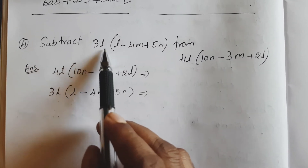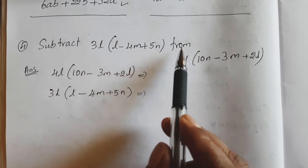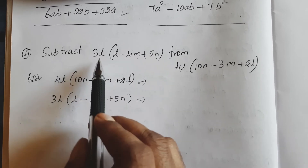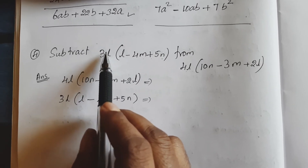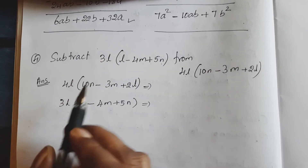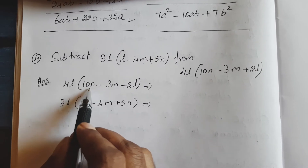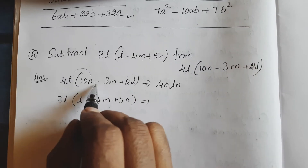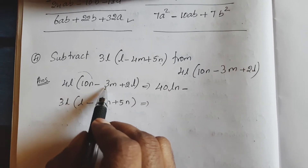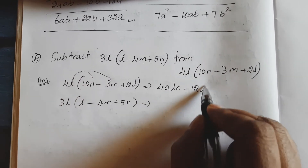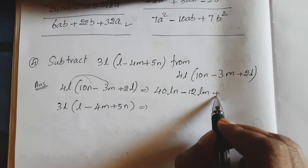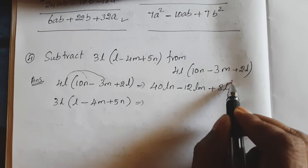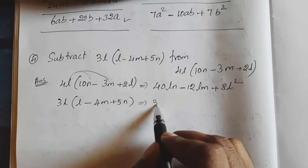Next question: subtract 3l(l minus 4m plus 5n) from 4l(10n minus 3m plus 2l). Students, here we first multiply the outside value by the inside values. So 4l times 10n: 4 times 10 is 40, and l times n is ln. Negative sign: 4 times 3 is 12, and l times m is lm. Plus sign: 4l times 2l gives 8l square. Next, 3l times l gives 3l square.